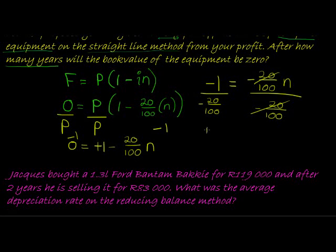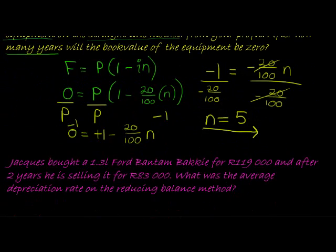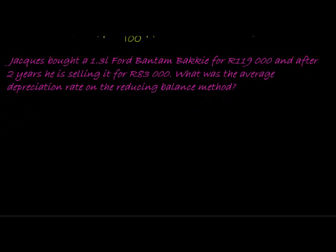And that gives me, if you calculate it, you'll find exactly 5. After 5 years, I will have no value left. And it actually makes sense because 5 times 20 is 100. So after 5 years, I have deducted 100% of the value.